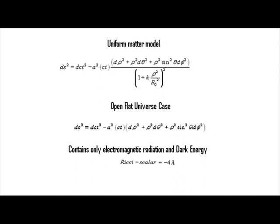Four physicists in the 1920s and 1930s independently worked out the solution for an expanding universe with a uniform matter distribution: Friedmann, Lemaître, Robertson, and Walker. However, they did it independently, so there are a bunch of different line elements that you see out there according to whichever coordinates they independently chose to use. You'll hear it referred to as different subsets of the names, depending on which line elements are being referenced. The more common name you will hear it referred to as is the Robertson-Walker model.